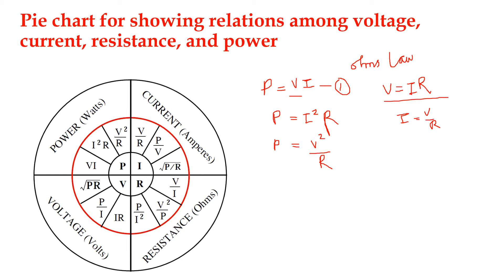Now, what is current? Current is equal to V by R. We can also write I is equal to P by V. And from the equation P = I²R, we get I squared equal to P by R, therefore I is equal to the square root of P by R.